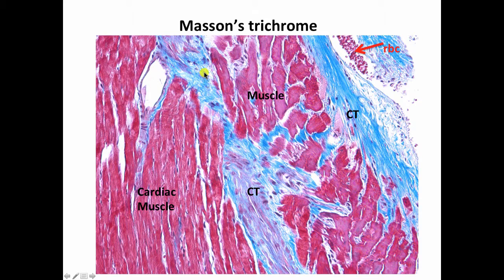Masson's trichrome or Mallory's trichrome stain will stain connective tissue rich blue, or sometimes green, but generally blue, and will stain muscle red. In this slide I've brought up cardiac muscle, but the same would be true with skeletal muscle or smooth muscle. Where you have a mixture of connective tissue overlying muscle, it will stain a sort of purplish color. Additionally, it will stain erythrocytes — red blood corpuscles, seen in this vessel here — a reddish color.